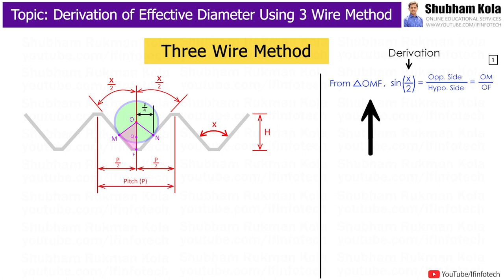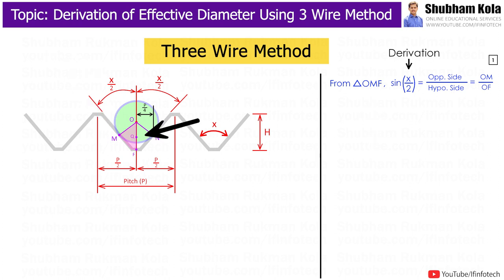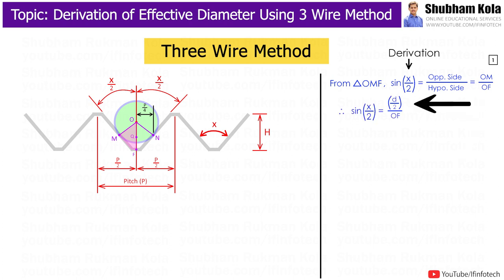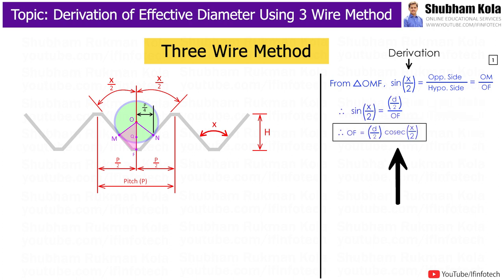From triangle OMF, sin(x/2) is the opposite side over the hypotenuse side, i.e. OM by OF, where OM is half of wire diameter. Therefore, sin(x/2) = (d/2) / OF, which gives OF equal to (d/2) cosec(x/2).